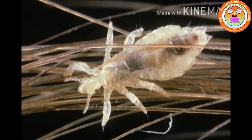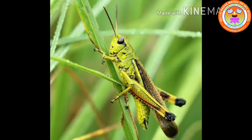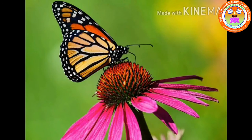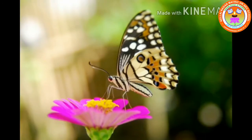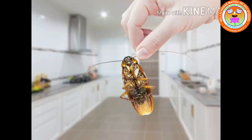Lice. It lives between our hair, so keep your hair clean. Grasshopper. It eats the plants and leaves. Butterfly. It sucks nectar from flowers. Cockroach. It is seen in the kitchen mostly, so keep your kitchen clean.